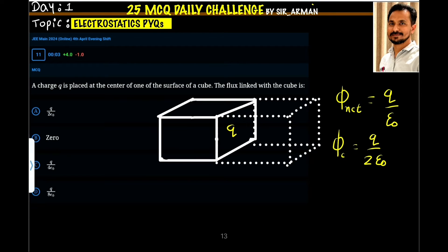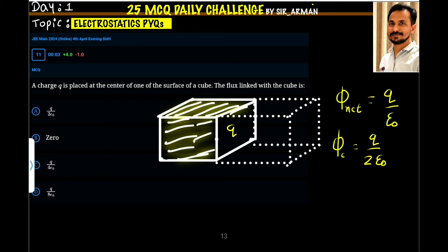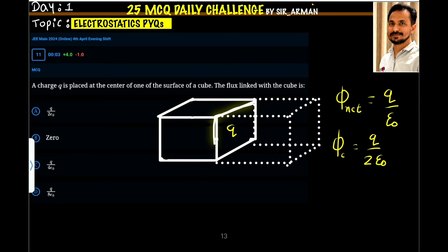A charge q is placed at the center of one of the surfaces of a cube. The flux linked with the cube is: Here is our original cube, and the charge is placed at any one of the surfaces. I have selected this surface, so on this surface the charge is placed here.